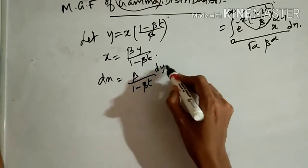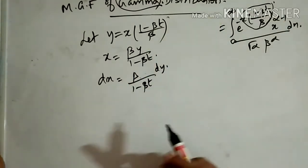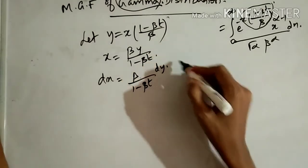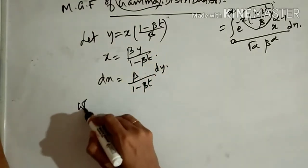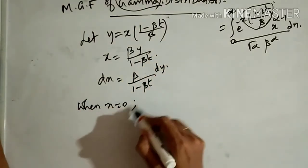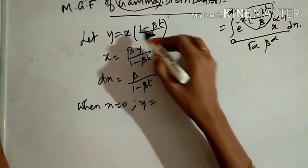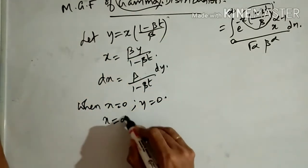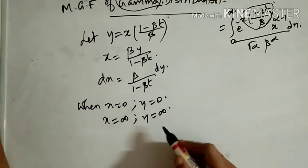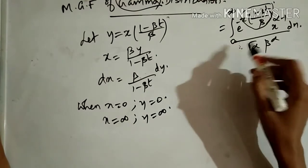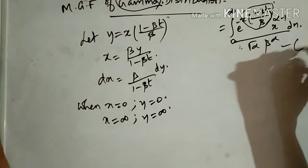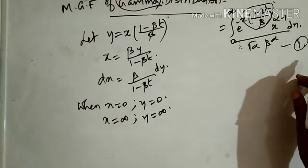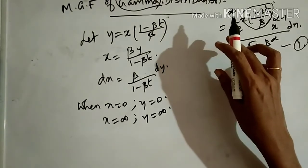Differentiating, dx = β/(1 - βt) dy. The limits remain 0 to infinity: when x = 0, y = 0, and when x = infinity, y = infinity. Now substitute these into the equation.